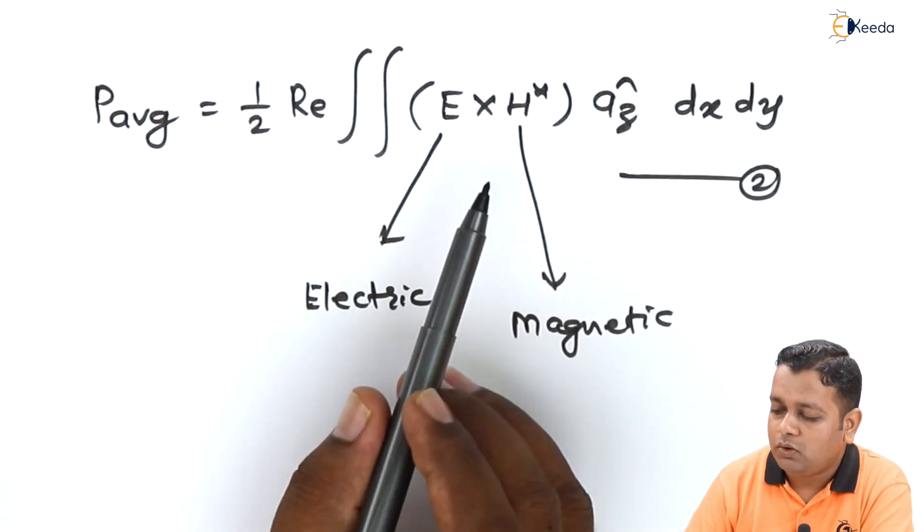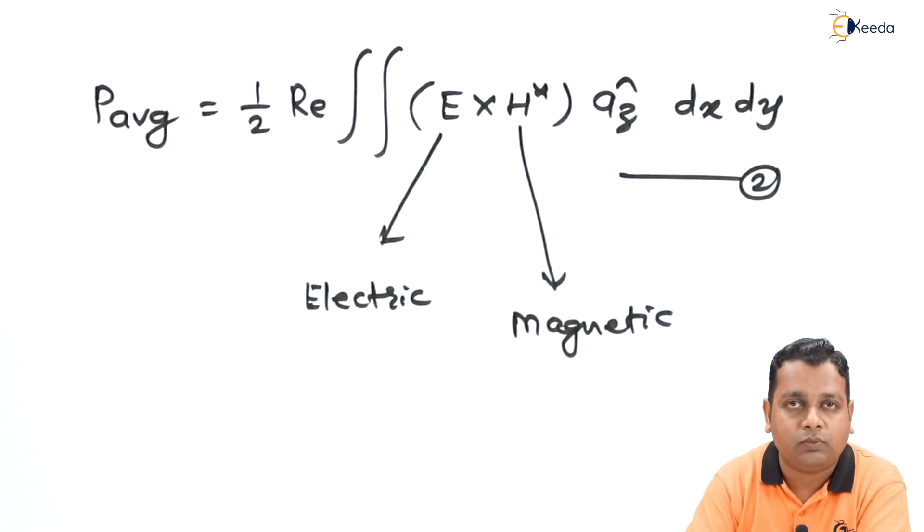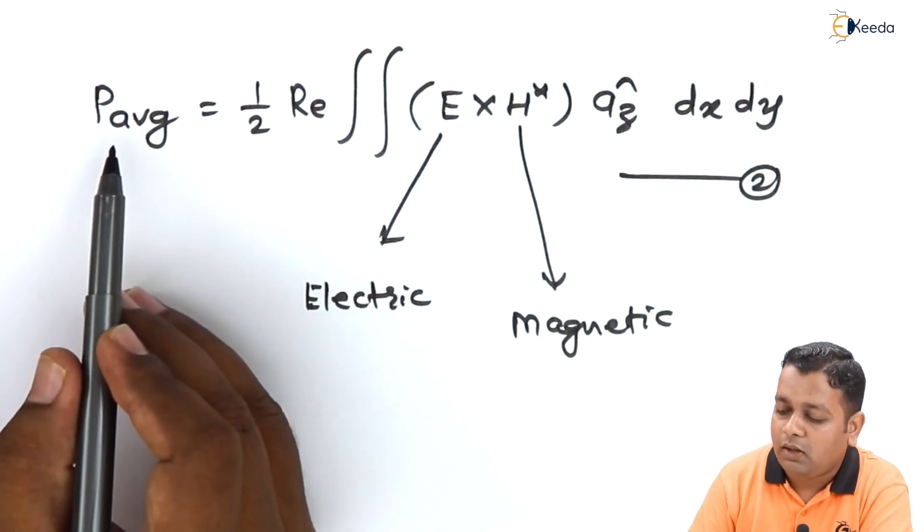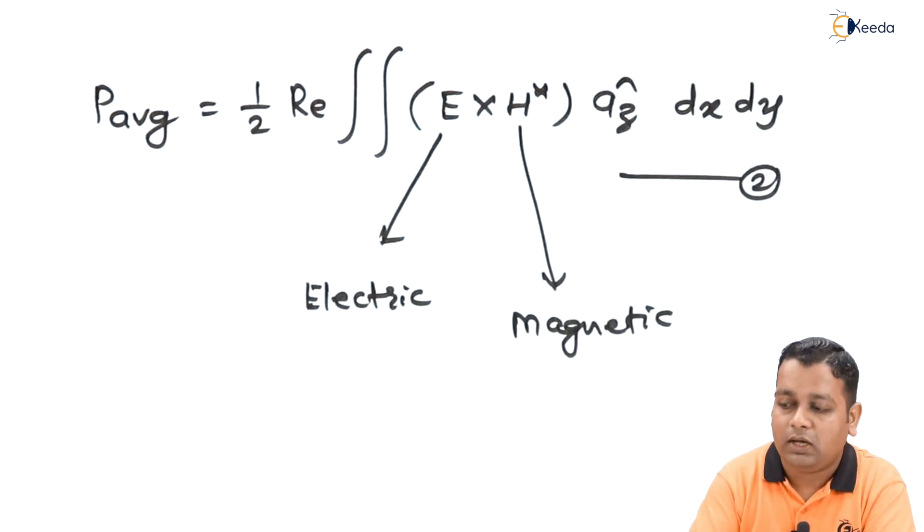This was all about the coplanar type of strip lines, and we have also discussed the corresponding formulation to make computations for characteristic impedance with the help of average power workflow in positive z direction.